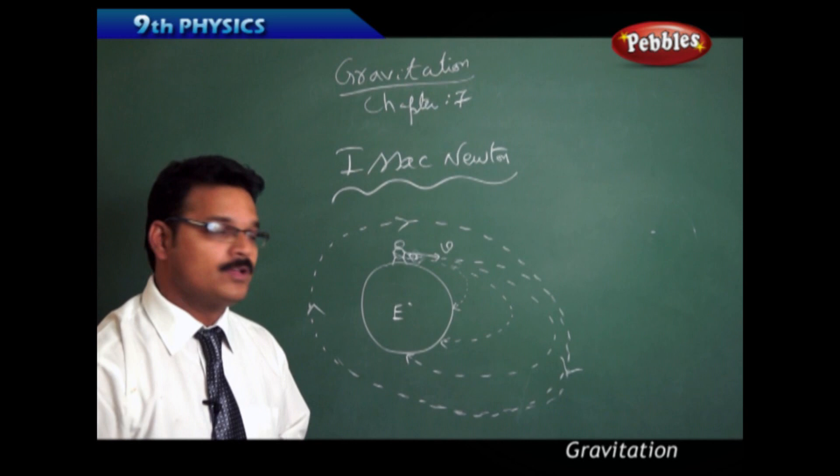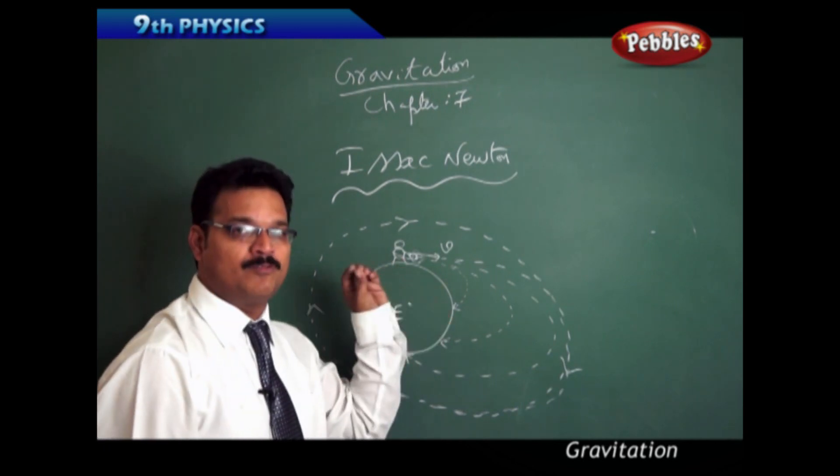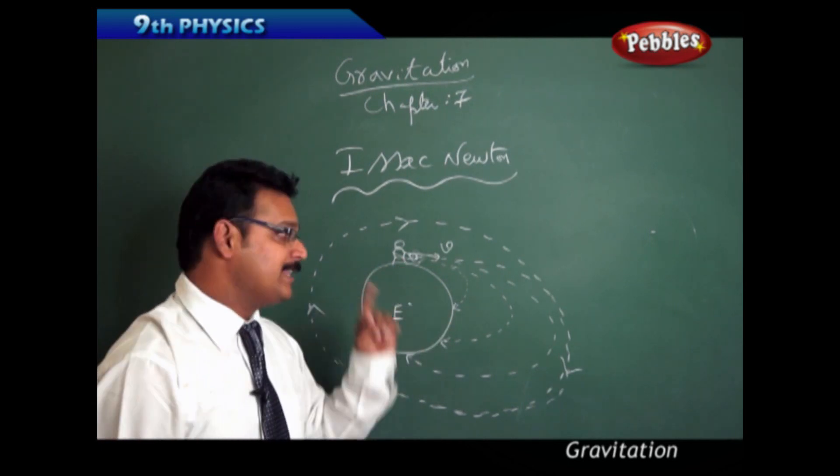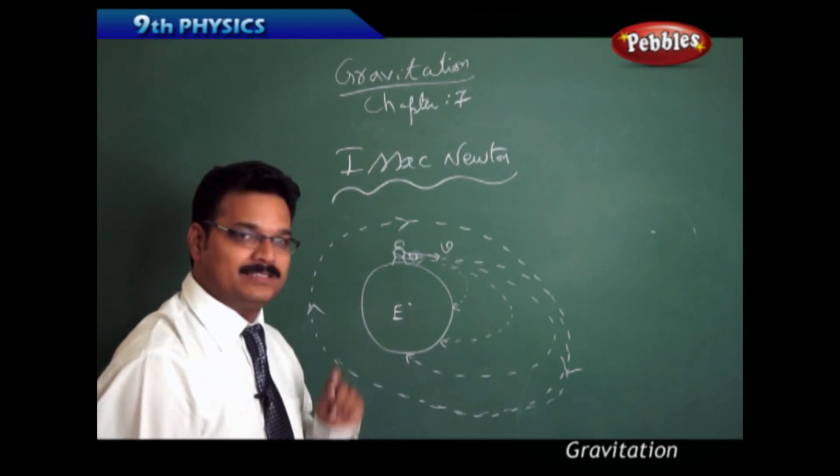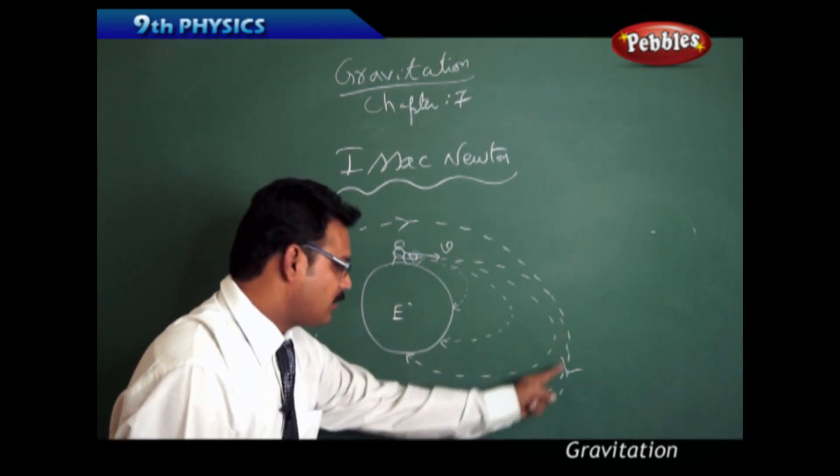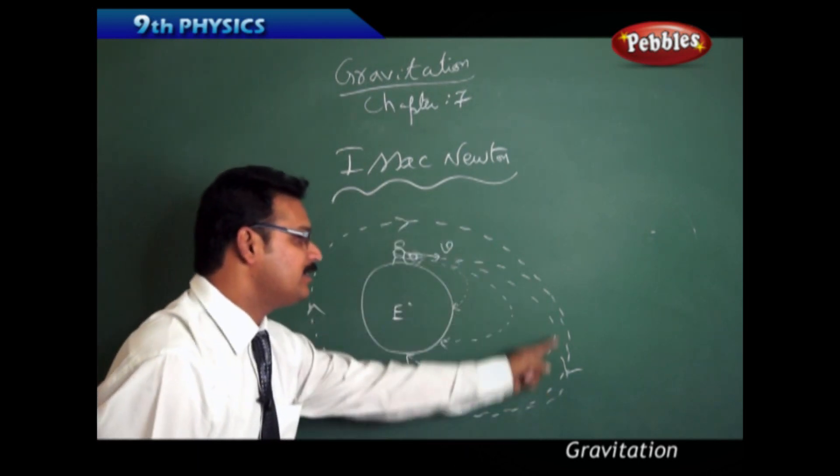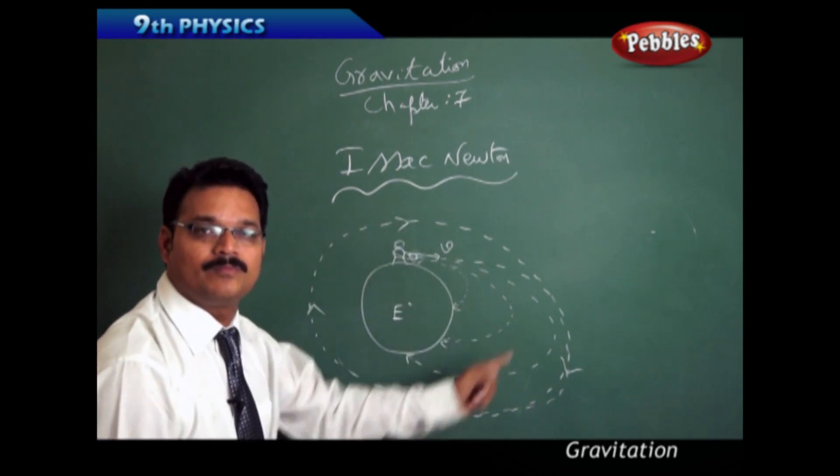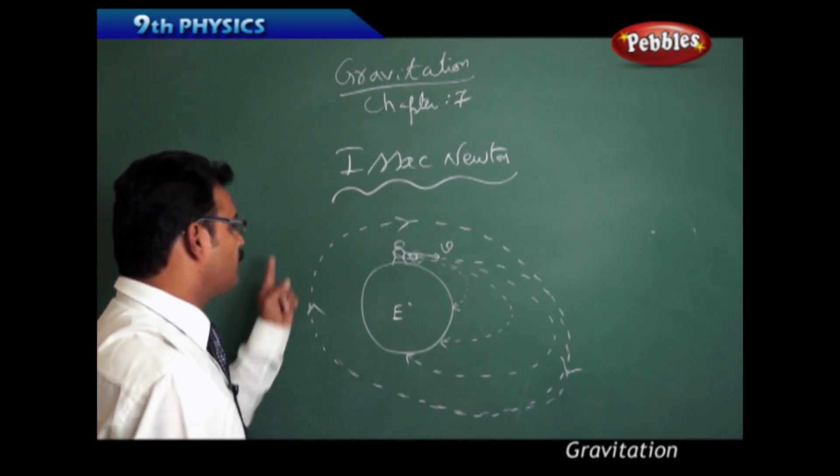See what happened now. When the ball is thrown with one particular maximum velocity, then the ball is never falling on the earth. Instead of that, it is continuing rotating around the earth.